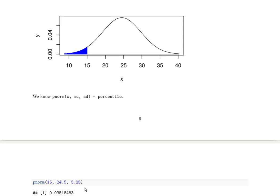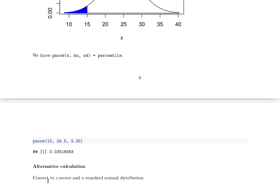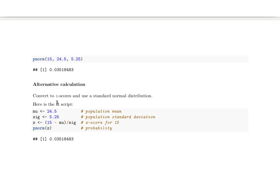Now let's look at an alternative way of doing this calculation. The alternative is to convert to z-scores and use a standard normal distribution. Here's the alternative calculation: we convert everything to z-scores and then calculate things with the standard normal distribution.